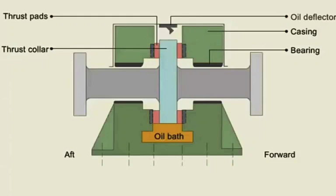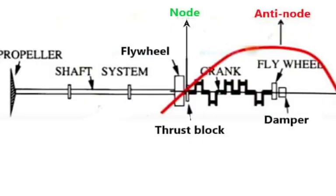To know where the thrust block should be located, we need to understand nodes and anti-nodes. A node is a fixed point where the amplitude of vibration is minimum or zero. An anti-node is the opposite — it has maximum amplitude of vibration and occurs between two nodes. Therefore, the thrust block must always be placed at nodes, not at anti-nodes. It is always better to position the thrust block at nodal points where vibration is zero or minimum.